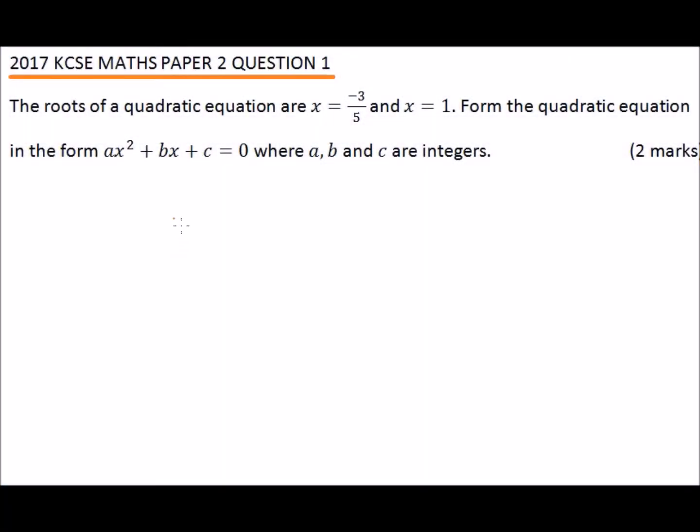This is a 2017 KCSE Maths Paper 2 Question 1, and it says the roots of a quadratic equation are x equals minus 3 over 5 and x equals 1.